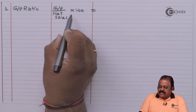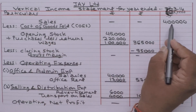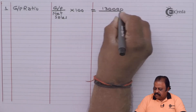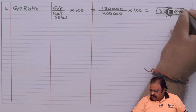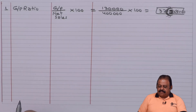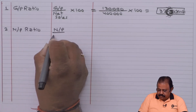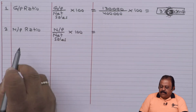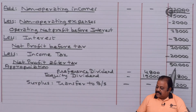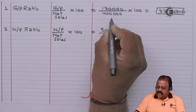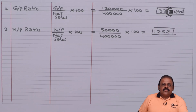Now income statement ratios. Gross profit ratio equals gross profit divided by net sales multiplied by 100: gross margin 1,30,000 divided by net sales 4 lakhs equals 32.5%. Net profit ratio equals net profit after tax divided by net sales multiplied by 100: 50,000 divided by 4 lakhs equals 12.5%.